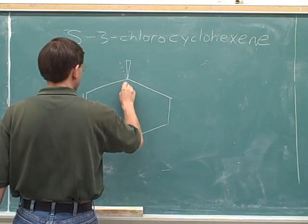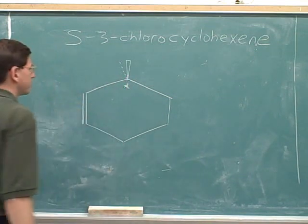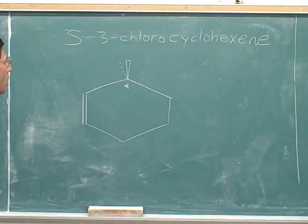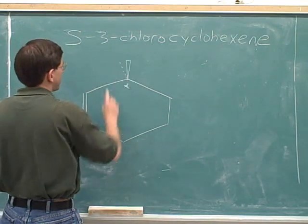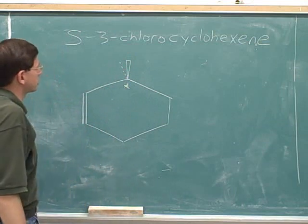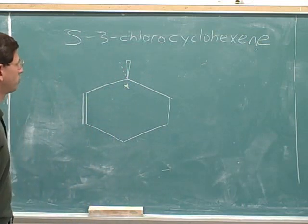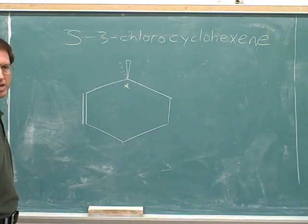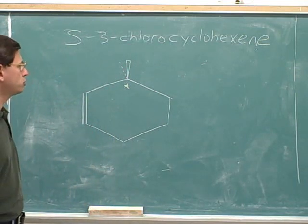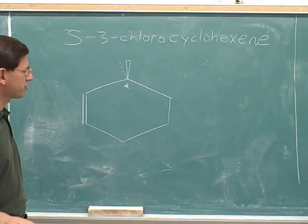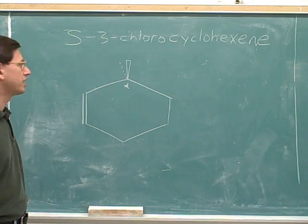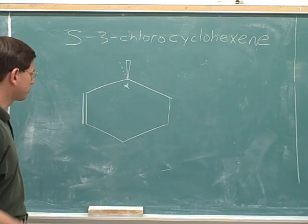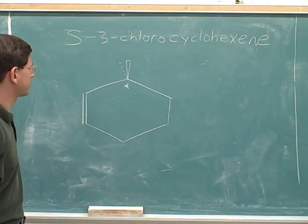Maybe I'll put in an asterisk to show that's the stereocenter. On the wedge and the dash, one of those is going to be the chlorine, and one is going to be a hidden hydrogen. As usual, when we're working with stereochemistry, we need to draw in the hidden hydrogen, at least when we're learning this material.